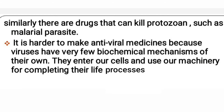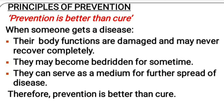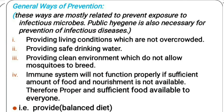Principles of prevention — by general ways and specific ways. Prevention is better than cure. When someone gets a disease, their body function gets damaged and may never recover completely; they may become bedridden and can serve as a medium for further spread of disease. General practices adopted for prevention include: avoid exposure to airborne microbes, adopt living conditions that are not overcrowded, provide safe drinking water, avoid vector-borne infection, and establish a clean environment.